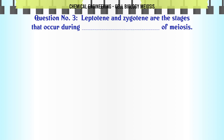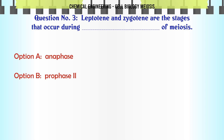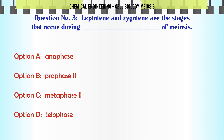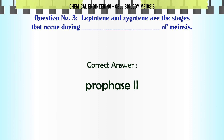Leptotene and Zygotene are the stages that occur during which phase of meiosis? A. Anaphase. B. Prophase 2. C. Metaphase 2. D. Telophase. The correct answer is Prophase 2.